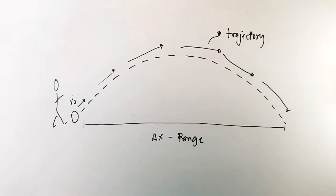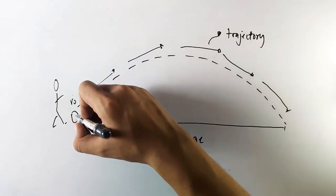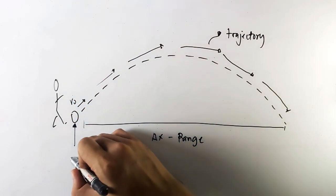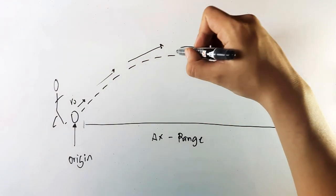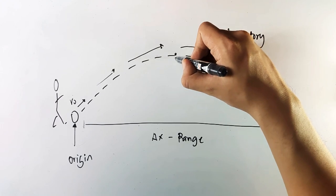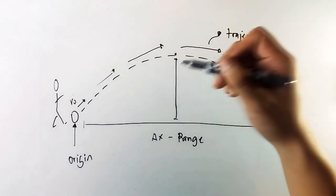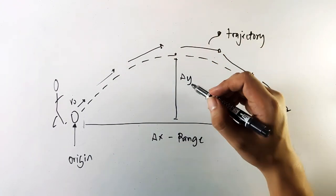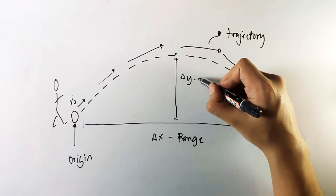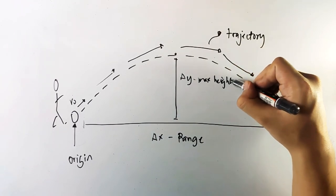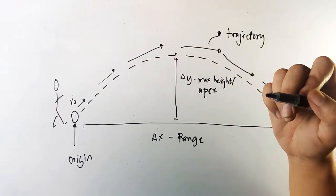Then next we have origin. This point is the starting point of the projectile, so you can name it as x sub 0 or y sub 0, depends on the axis you're going to work with. Then we have apex or the maximum height. From our previous topic we know this as delta y. This can be termed as max height or the apex.